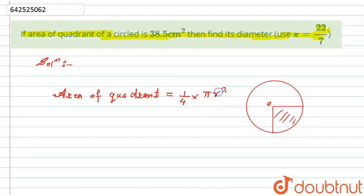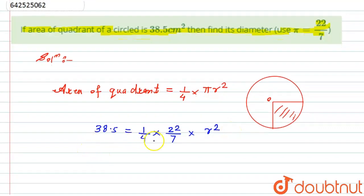Now I will simply put the values. The area of this quadrant circle is given to us, that is 38.5 centimeter square, which equals one by four into π, given to us as 22 by 7, into r² which we have to calculate.